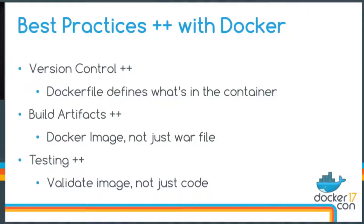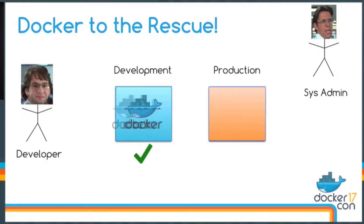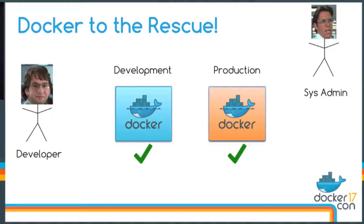Now we have best practices for our code — let's extend that to include all the dependencies our application needs to run. We have version control, our Dockerfile which defines our dependencies. For our build artifacts, we're not just building a code archive — we're creating a Docker image. And then we're testing that image and validating it before going to production. So Michael Bolton gets smart, he dockerizes his application. Even though Lumberg is there to mess with the production environment, Michael deploys his Docker container and it works in both environments. Now he's not spending time debugging environmental issues — he has more time to make sure there's a cover sheet on all his TPS reports.